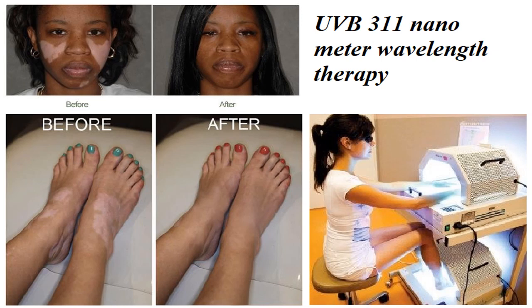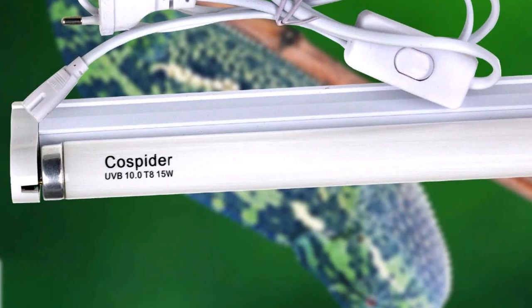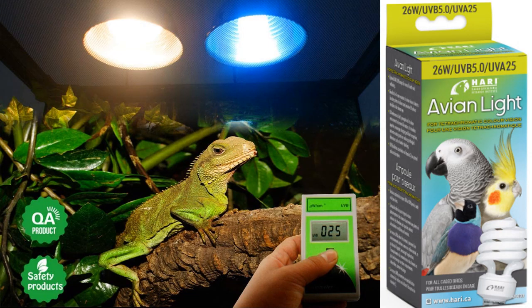Many UVB home therapy machines are also available in some countries. All cold-blooded reptiles and all colorful birds cannot survive without UVA and UVB light, so every zoo and aviary keeps UVB lamps above their cages.